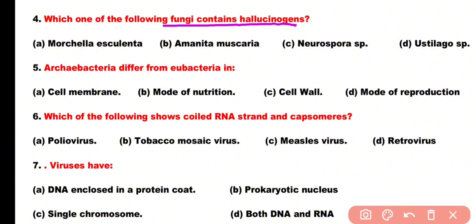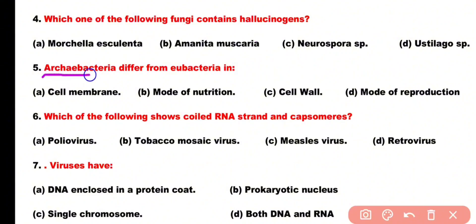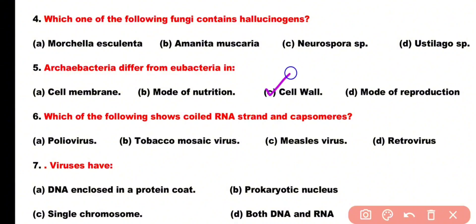Correct answer is option B. Amanita muscaria contains hallucinogens. Question number 5: Archaeobacteria are different from eubacteria in: cell membrane, mode of nutrition, cell wall, or mode of reproduction. Correct answer is option C. Archaeobacteria are different from eubacteria because archaeobacteria have no peptidoglycan in their cell wall.